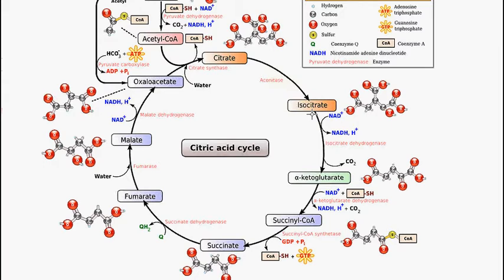The isocitrate is then oxidized and decarboxylated via the enzyme isocitrate dehydrogenase. This step is an irreversible reaction because the CO2 is released as a gas, so it can't go backwards and have CO2 combined with alpha-ketoglutarate. The yield is NADH and carbon dioxide.